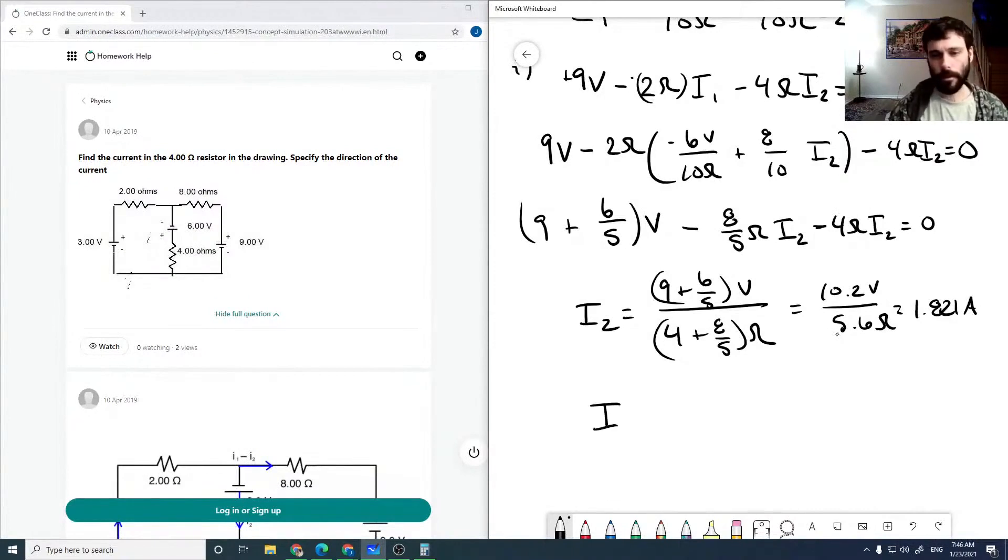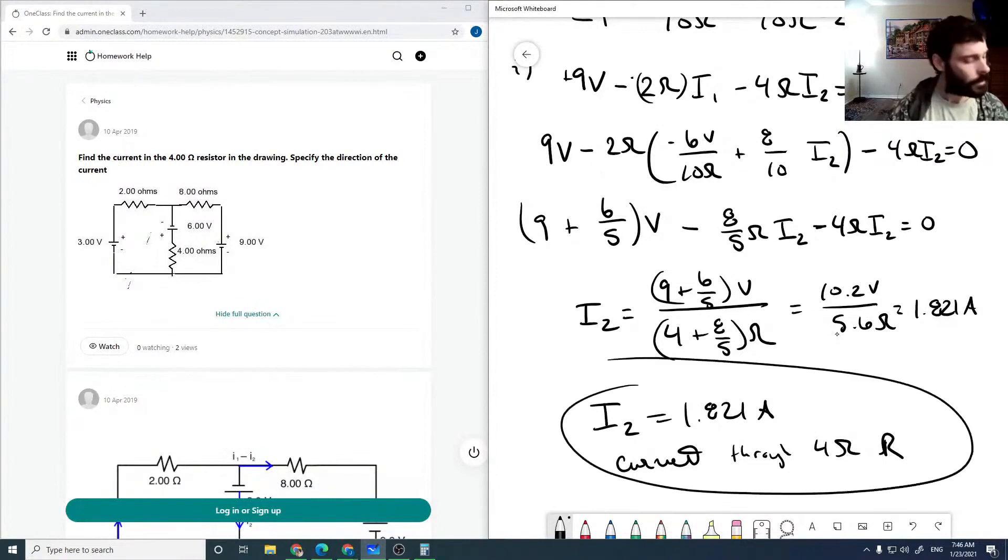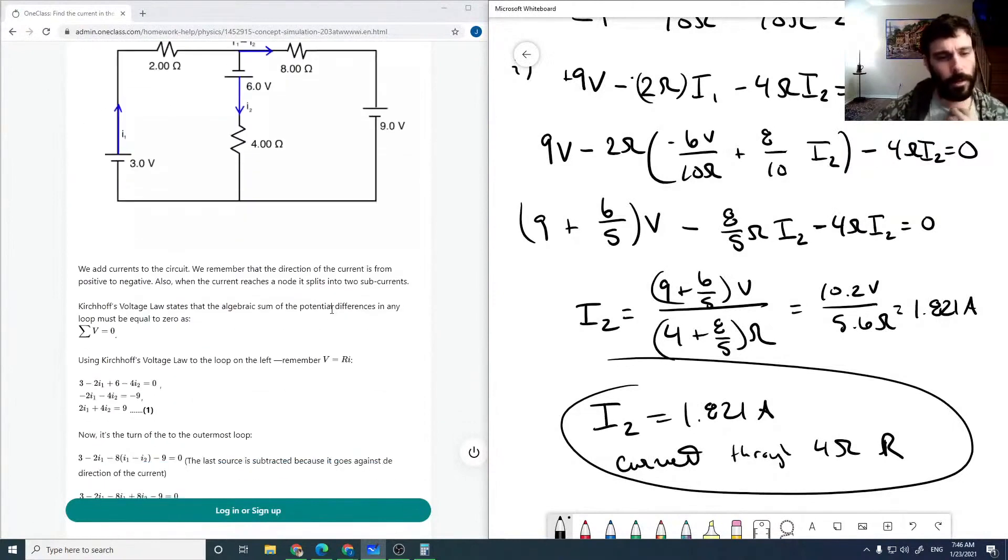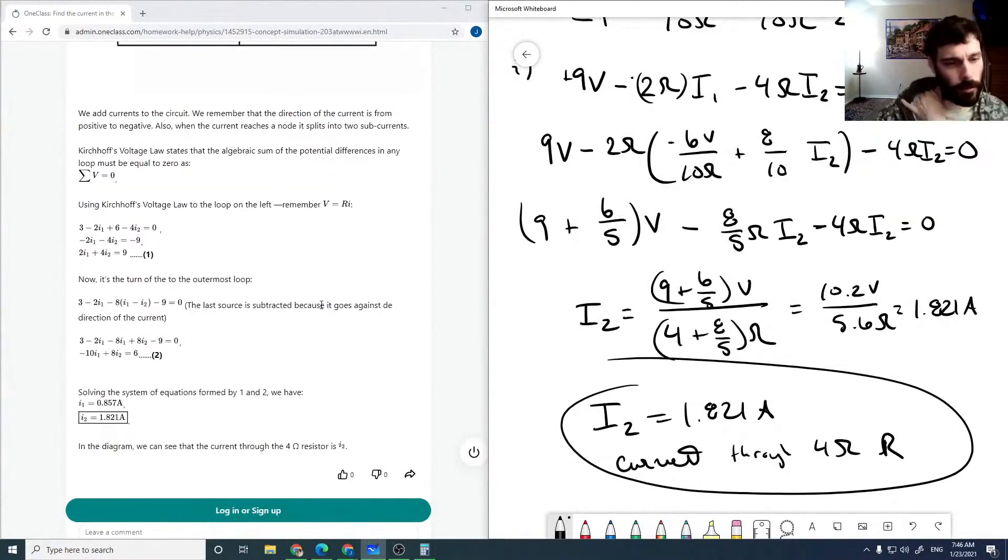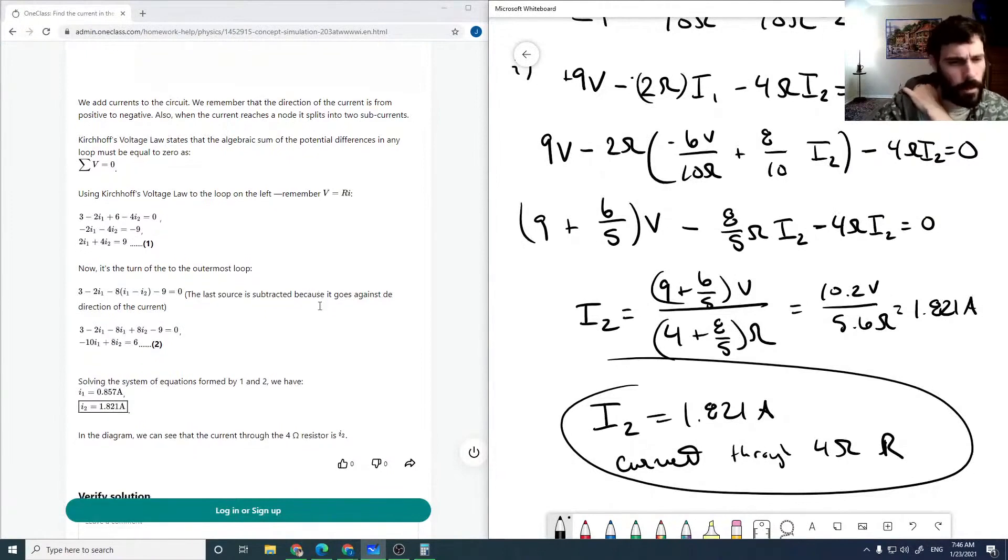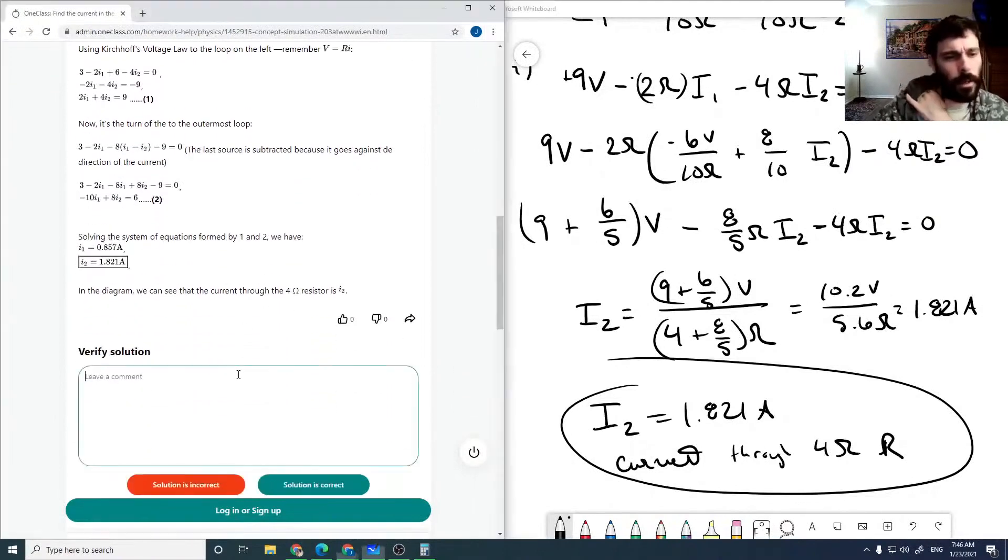So then I2 is 1.821 amps, and that's the current through the 4 ohm resistor. So that's our current. Checking to our solution here, so we want to use a couple of Kirchhoff loops, and then we get 1.821 amps. So that was good.